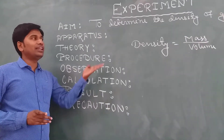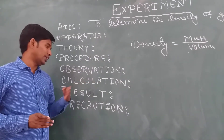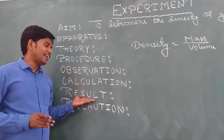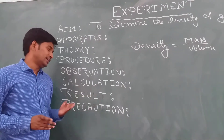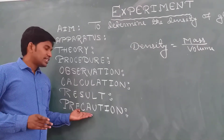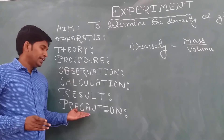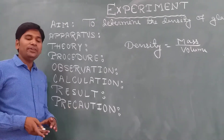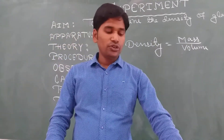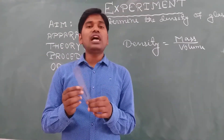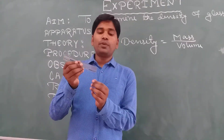For calculation, we will divide mass by volume to get the density, and finally we will write the result. Certain precautions also need to be followed — when measuring the length, we should use a proper scale and start from the zero of the scale.